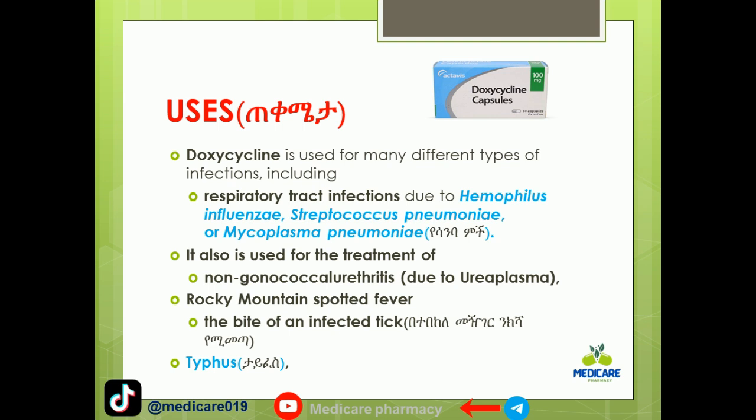Doxycycline is used for many different types of infections including respiratory tract infections due to Haemophilus influenzae, Streptococcus pneumoniae, and Mycoplasma pneumoniae, including pneumonia.